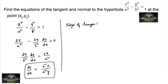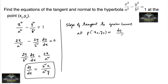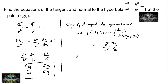So the slope of tangent to the given curve at point (x₀, y₀) is equal to dy/dx at the point (x₀, y₀), which is equal to b² / a² × x₀ / y₀. This is the slope of tangent.